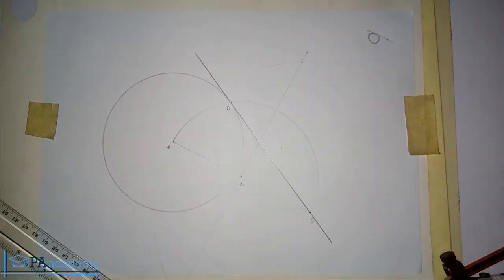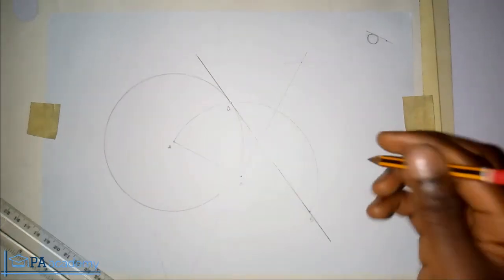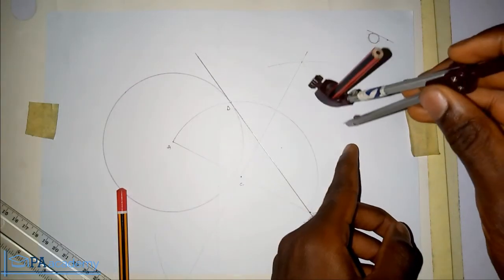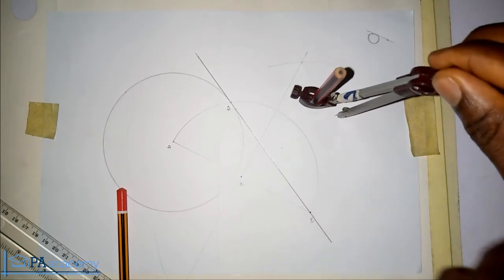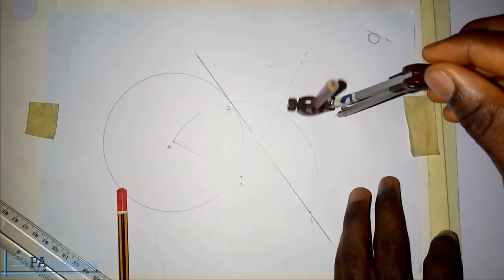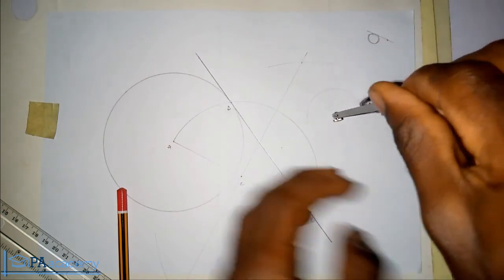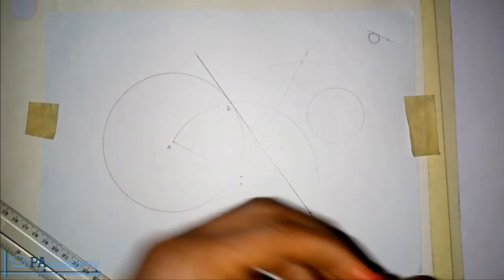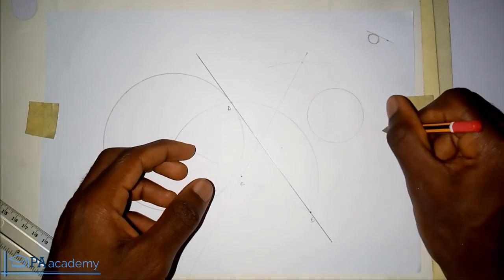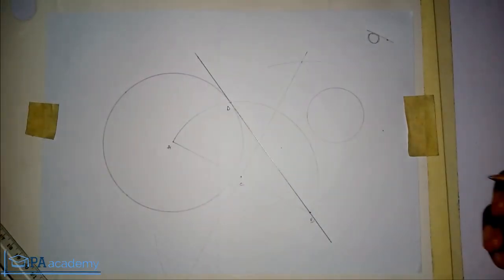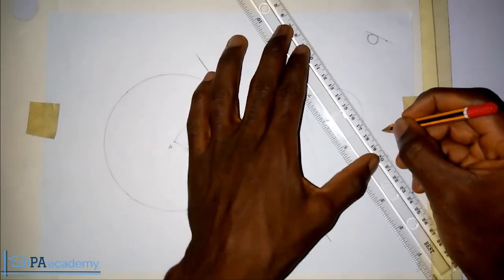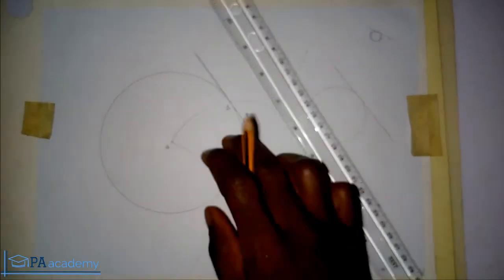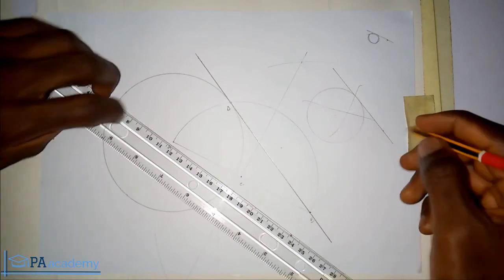It's also important to mention that if you come across this question, don't just go ahead and draw your circle and, with your ruler, draw a line and say this is the tangent. No, it doesn't work like that. Make sure you follow the proper steps. This is how you go about it, and these are the steps.